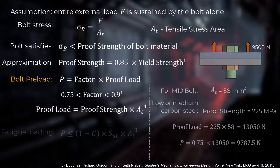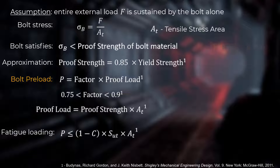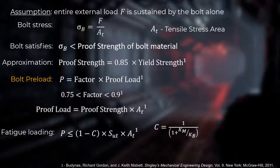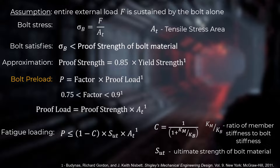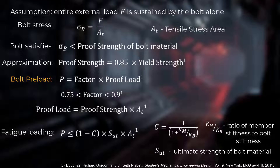In case of fatigue loading, additional constraints must be applied on the upper limit of the applied bolt preload. Here, C is a factor calculated using the ratio of member stiffness to bolt stiffness, SUT is the ultimate strength of the bolt material, and AT is the tensile stress area of the bolt. If the calculated bolt preload does not satisfy this condition, then additional bolts and/or a different size bolt may be called for.